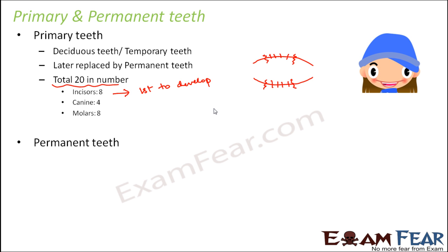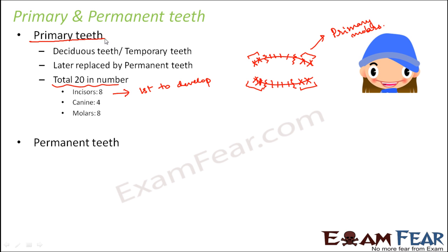Premolars are absent in the primary teeth. Molars are present, and there are eight molars total — two on each side of each jaw. These are known as primary molars. This primary set is also called milk teeth, because it develops in babies who drink a lot of milk. In primary teeth you only have incisors, canines, and molars — no premolars.